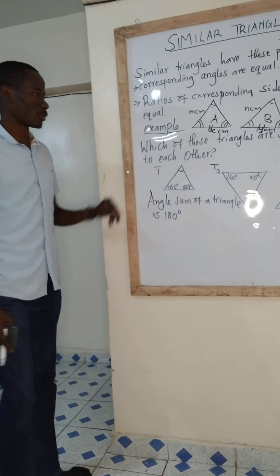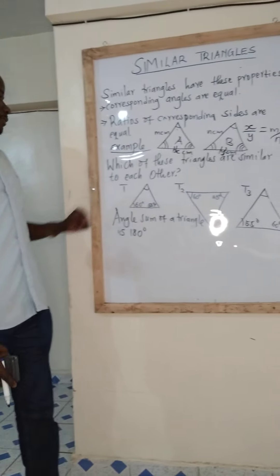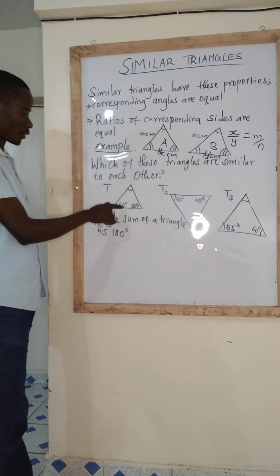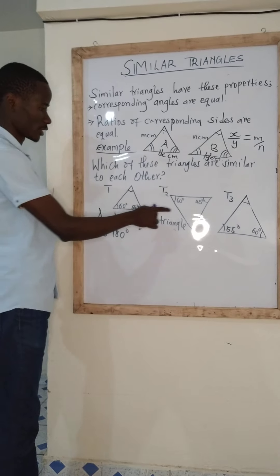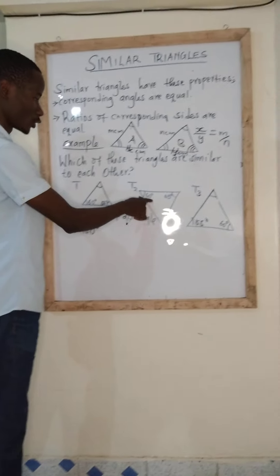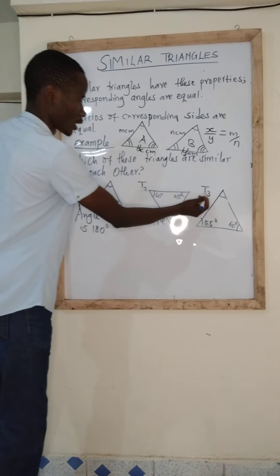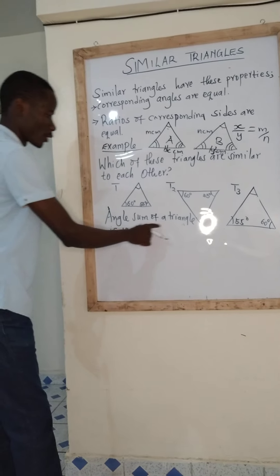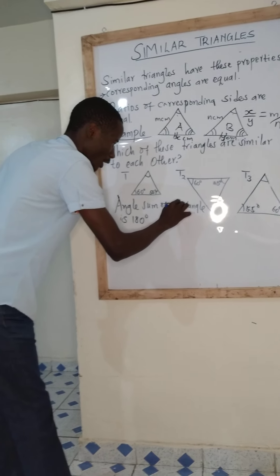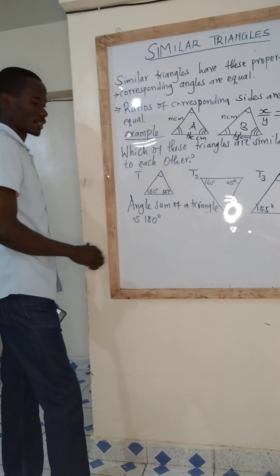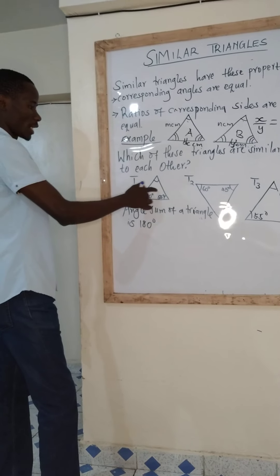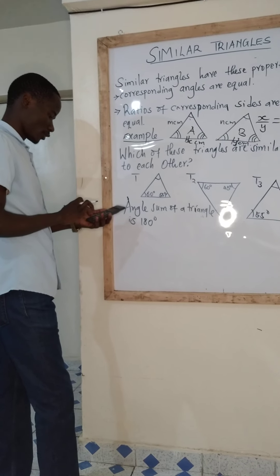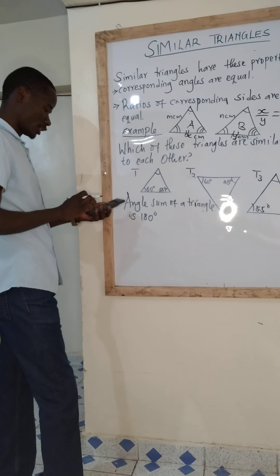Now, an example. Which of these triangles are similar to each other? Looking at triangle T1, we have been given two angles. Triangle T2, two angles, and triangle T3, two angles. We know that the angle sum of a triangle adds up to 180 degrees. So if we have these two angles and add them, we will find the missing angle. So we shall say 180 less the given angles.